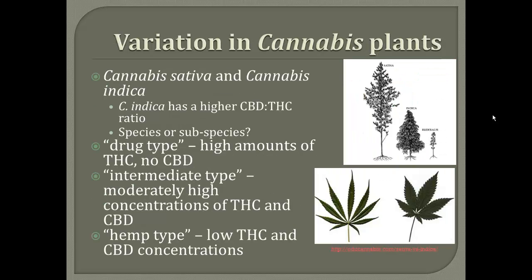Here I'd like to talk about the variation in cannabis plants. In the picture at the top, I have the habit of Cannabis sativa, Cannabis indica, and Cannabis ruderalis plants. Cannabis indica and Cannabis ruderalis are two different species that have been speculated to be separate from Cannabis sativa. In the bottom picture, I have a picture of the Cannabis sativa leaf on the left and the Cannabis indica leaf on the right. Cannabis indica leaves tend to be wider and shorter than Cannabis sativa leaves. Cannabis indica is speculated to have a CBD to THC ratio that is much higher than Cannabis sativa. Typically, there are three types of cannabis plants: the drug type has high amounts of THC and no CBD, the intermediate type has moderately high concentrations of both, while the hemp type has low concentrations of both.